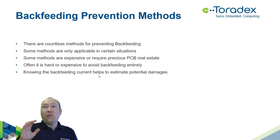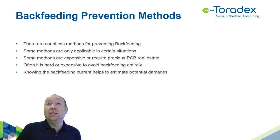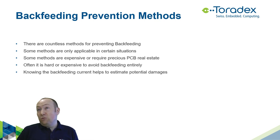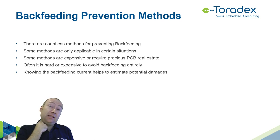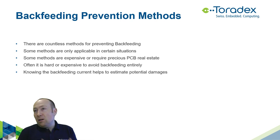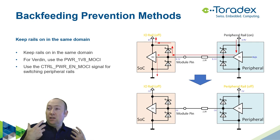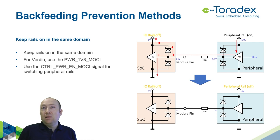Let's go into the different methods of preventing backfeeding. There are countless methods, and some work for certain signal types while others don't. Some are expensive or require a lot of board space. It's often quite hard and expensive to avoid backfeeding entirely — which means you may just want to reduce the backfeeding current to prevent potential damage. The first and most obvious prevention method is to try to keep things on the same power domain: if you turn off the peripheral together with the module, there's no backfeeding.